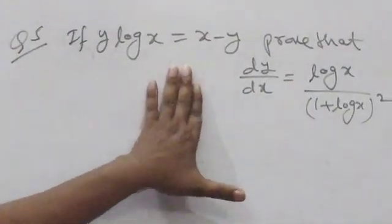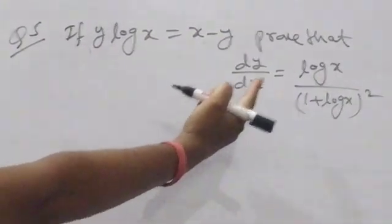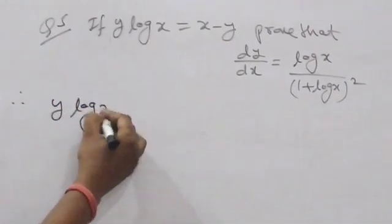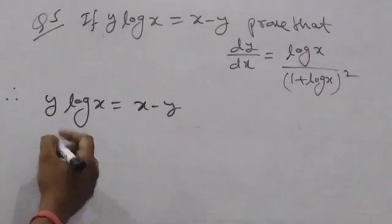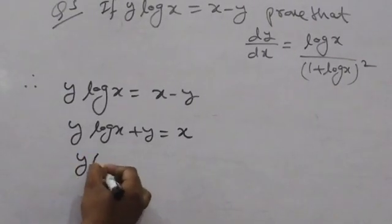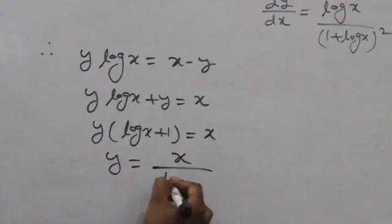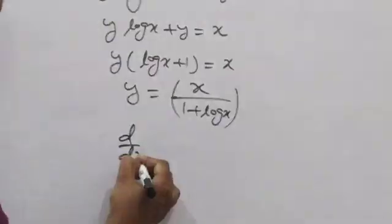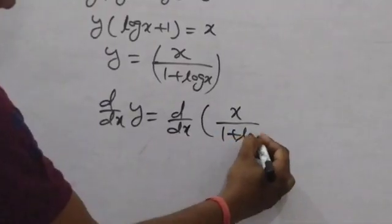This next question is important. If y·log x = x − y, we have to prove that dy/dx = log x / (1 + log x)². Starting: y·log x = x − y. Taking y common: y(log x + 1) = x. Therefore y = x / (1 + log x).